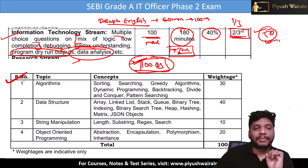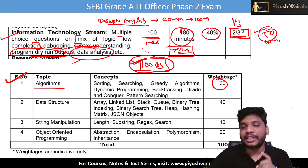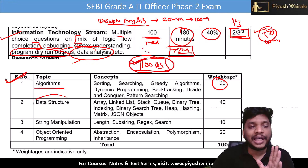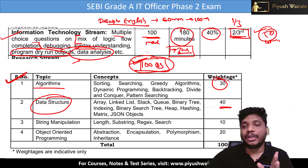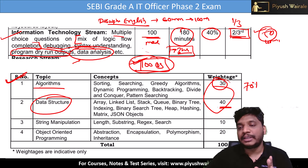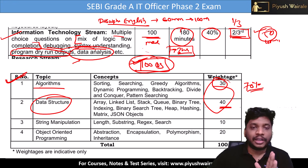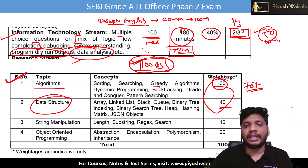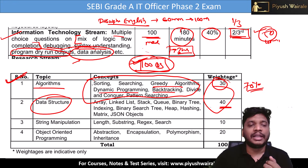You can see the phase two syllabus. First is algorithms — 30% weightage. Then we have data structures — 40% weightage. Together that is 70%. You can see sorting, searching, greedy algorithms, dynamic programming, backtracking, and divide and conquer — all these things are part of the algorithm section.